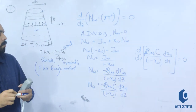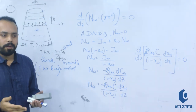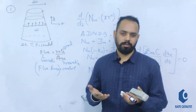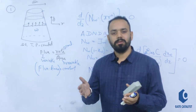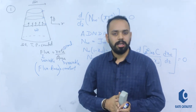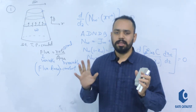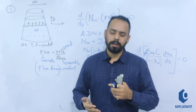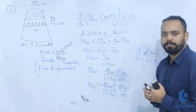See how straightforward this problem is — nothing to panic about. The problem looks lengthy but takes only four or five minutes with the right concept. In the GATE exam, no problem requires 15-20 minutes. Always attempt other questions first, and come back to lengthy-looking problems when you have time. This was the first problem on variable area mass transfer.